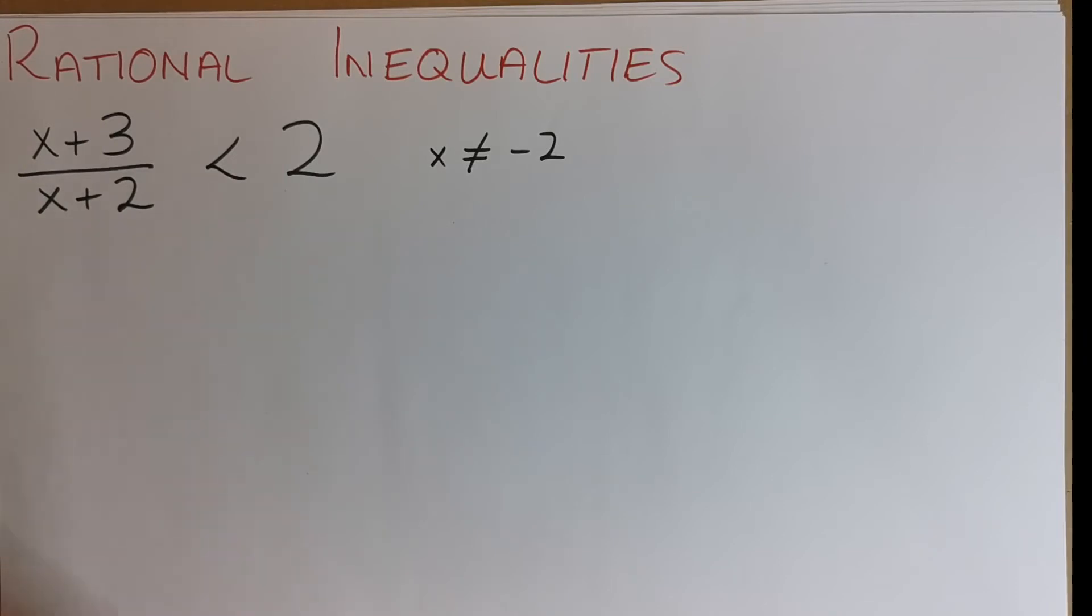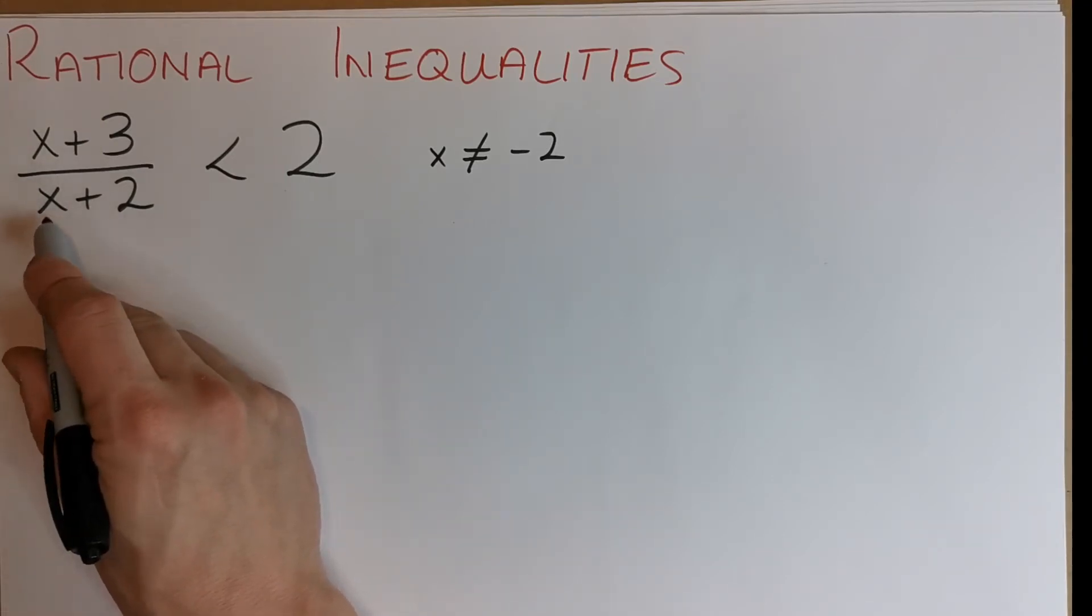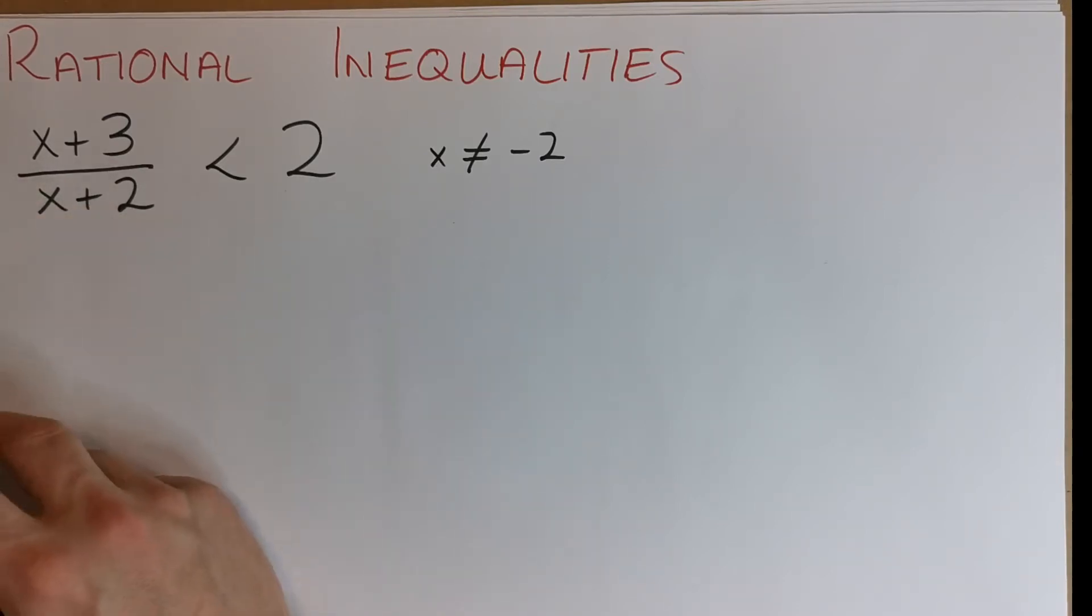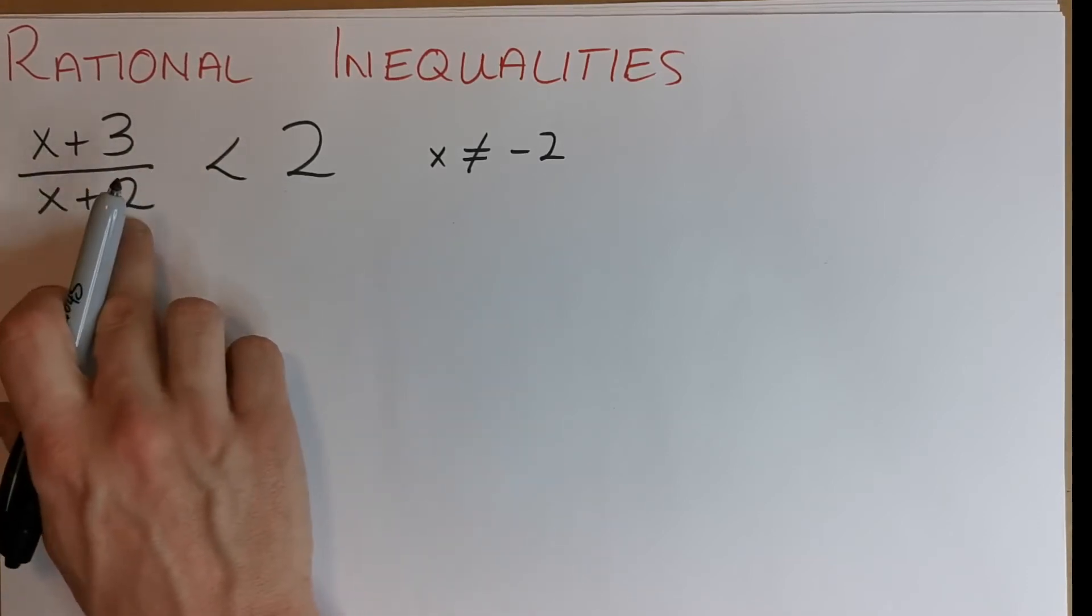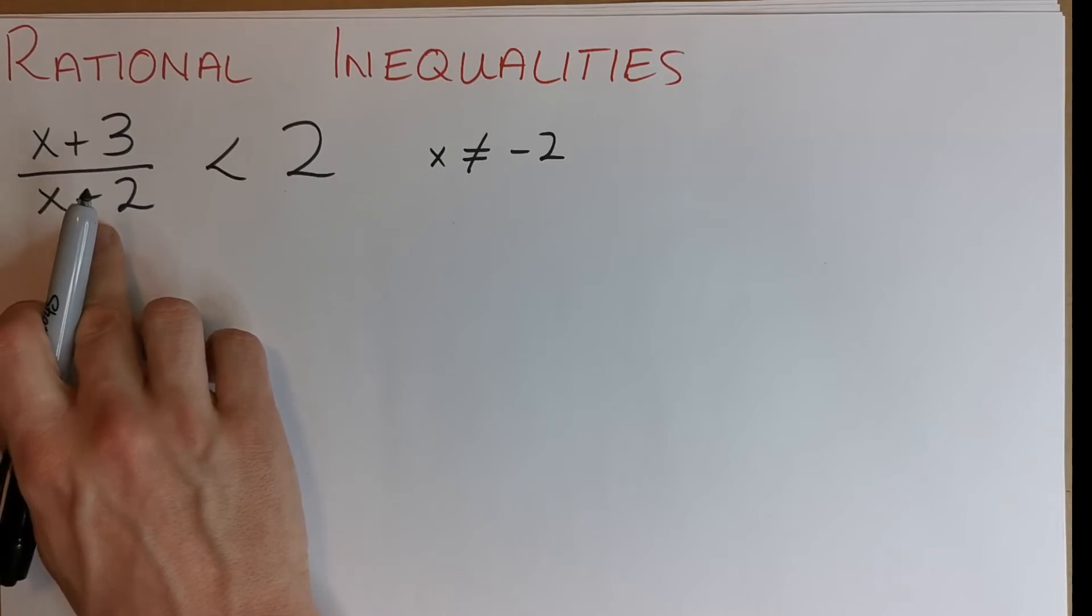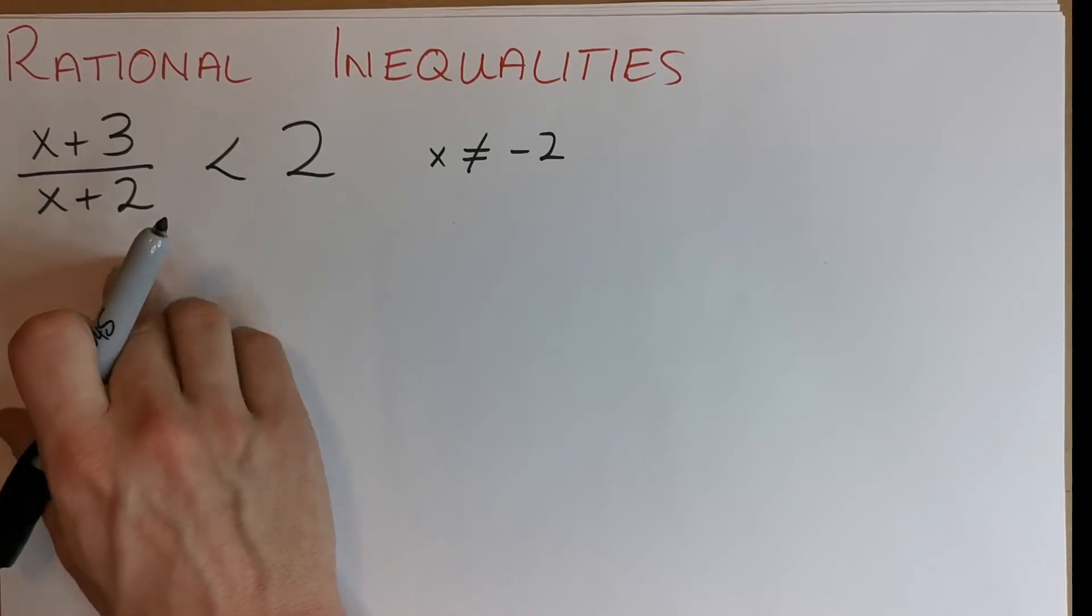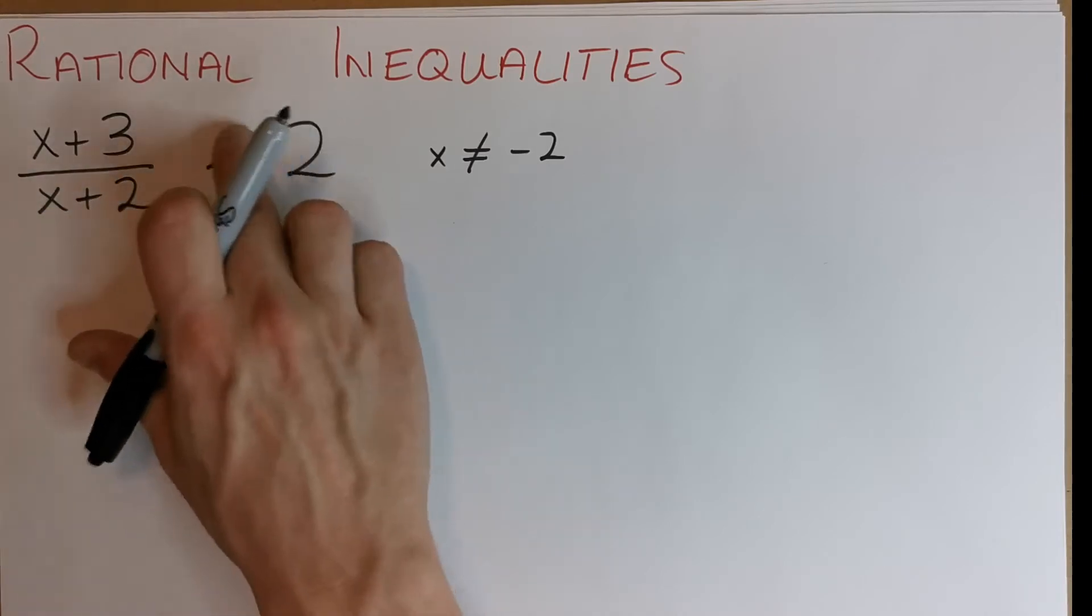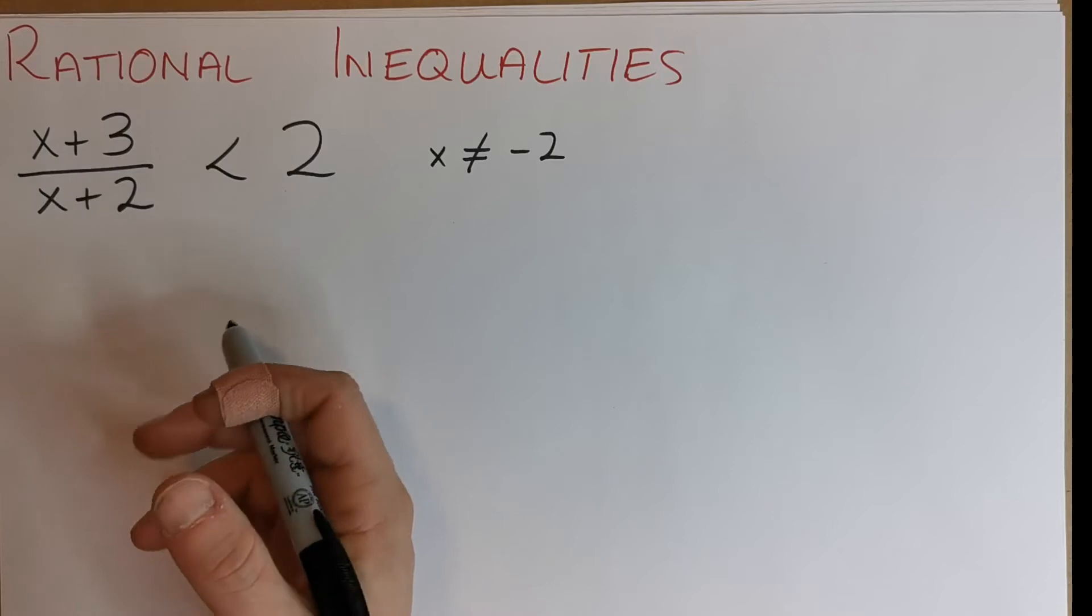So when we look at something like this, we want to just multiply across by x plus 2, but we can't do that because if we were multiplying across by something negative, we know it flips the sign. We actually don't know what this quantity x plus 2 is. For instance, x can be any real number, so if x was minus 4, minus 4 plus 2 would be minus 2, that means we'd be multiplying by something negative which would flip the inequality. We just don't know if x plus 2 is negative.